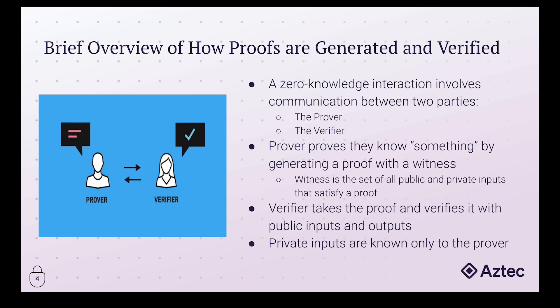The prover uses this information to generate a proof and then passes it to the verifier. The verifier takes this proof along with any public inputs and outputs, and is able to verify in reasonably quick time whether the proof is valid. It's absolutely essential that the prover be in control of all private inputs — that's where the ZK aspect comes in. For example, if you're proving you own a public address by showing you have the private key, that private key must remain a private input so it's never exposed.